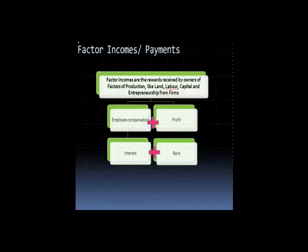Net factor income — first, let's look at what factor income means. Income is the rewards received by the owners of factors of production. Now, we know there are four factors of production: land, labor, capital, and entrepreneur. For each of these factors of production, we know there is a cost. Labor gets compensated in the form of employee compensation. Whoever owns the land charges rent for it. Capital — if I lend you my capital, I will charge you interest. An entrepreneur gets profit.